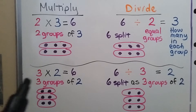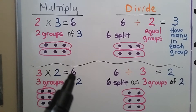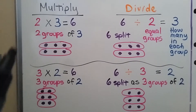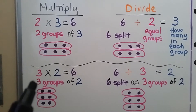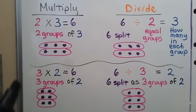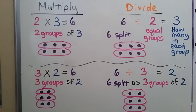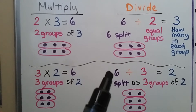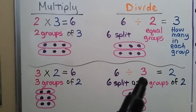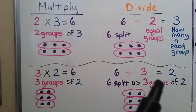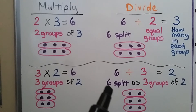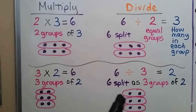When we have 3 times 2 equal to 6, the factors are switched in order. That means we have 3 groups of 2. When we divide 6 divided by 3 equals 2, we have 6 split into 3 groups of 2. There's 2 in each group.